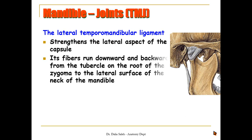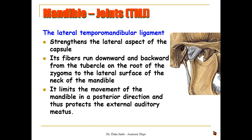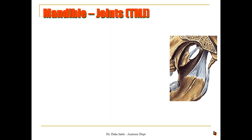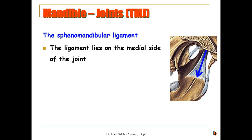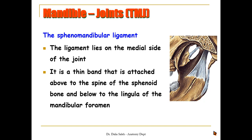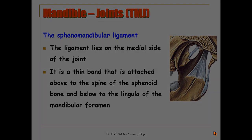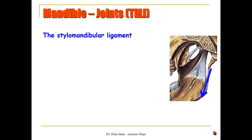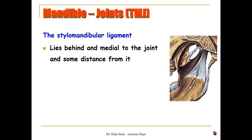This capsule is strengthened by ligaments. We have the lateral temporomandibular ligament, which strengthens the lateral aspect of the capsule. Its fibers run downwards and backwards from the tubercle on the root of the zygoma to the lateral surface of the neck of the mandible. This ligament limits posterior movement of the mandible, thus protecting the external auditory meatus. We also have the sphenomandibular ligament, which lies on the medial side of the joint. It is a thin band attached above to the spine of the sphenoid and below to the lingula of the mandibular foramen.